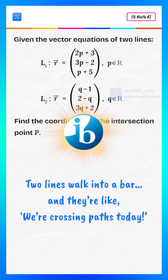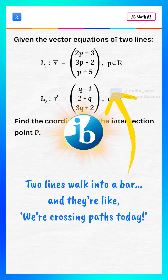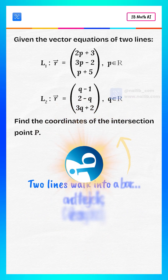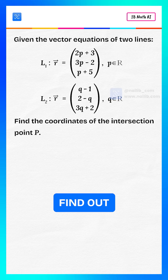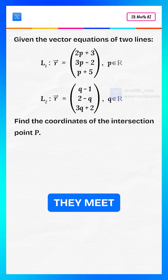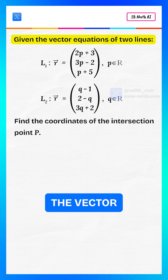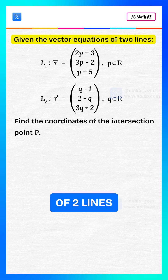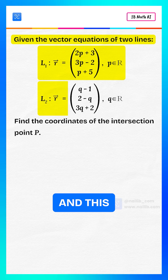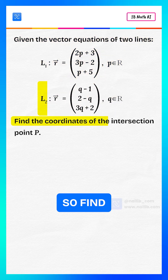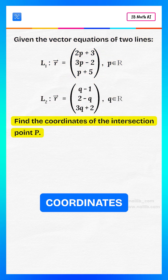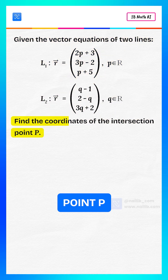Two lines walk into a bar, and they're like, we're crossing paths today. Let's find out where they meet. Given the vector equations of two lines, this and this, find the coordinates of the intersection point P.